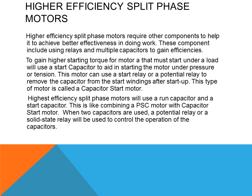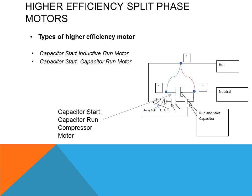High-efficiency split phase motors will use a run capacitor and also a start capacitor. This is like combining a permanent split capacitor motor and a capacitor start motor together. When two capacitors are used, a potential relay or a solid state relay will be used to control the operation of these capacitors. This is a wiring diagram of a refrigeration unit showing the compressor, which is using a start capacitor and a run capacitor, and using a potential relay to disengage the start capacitor after starting up.